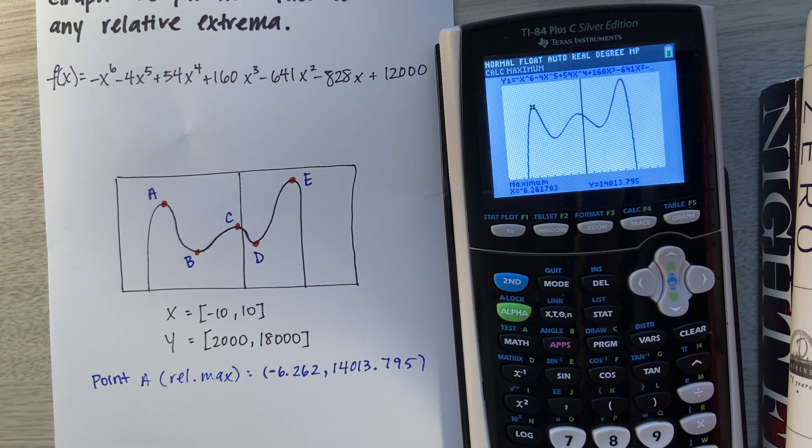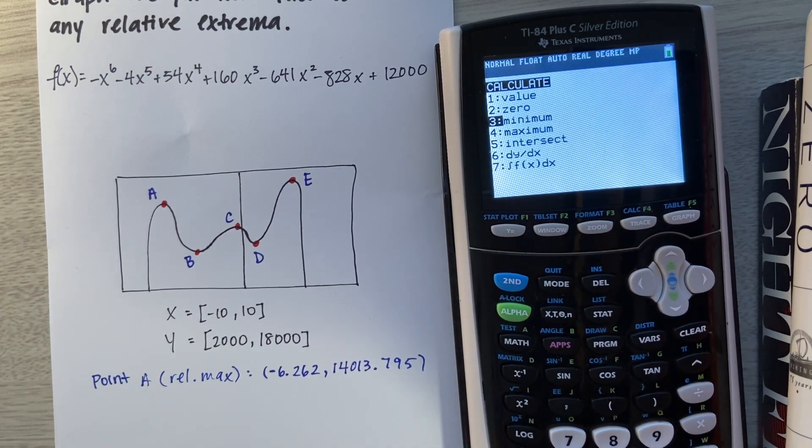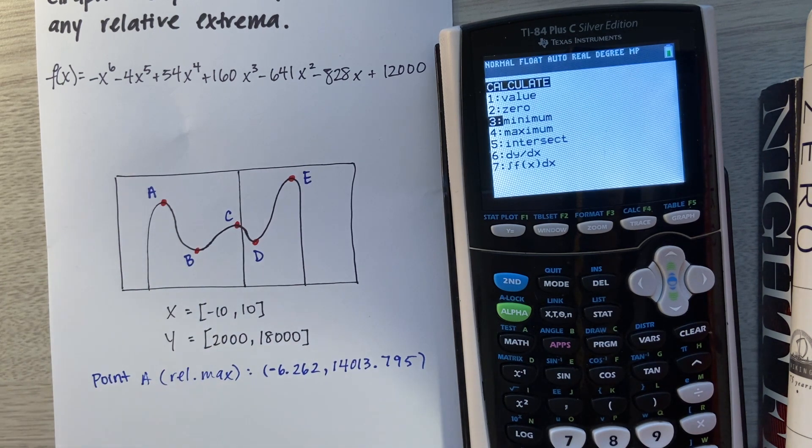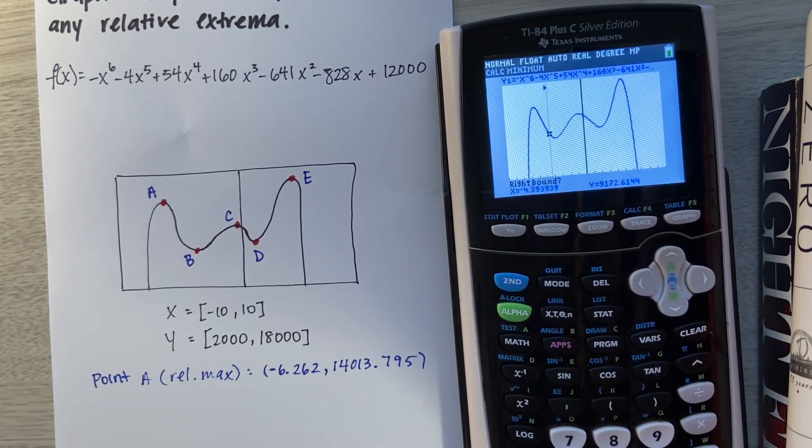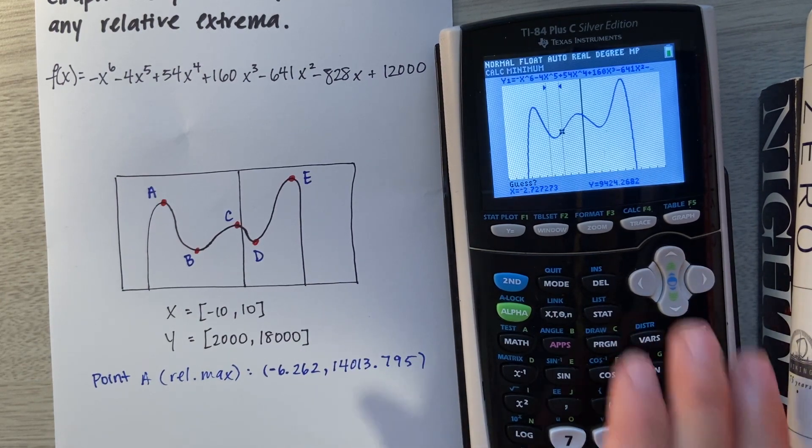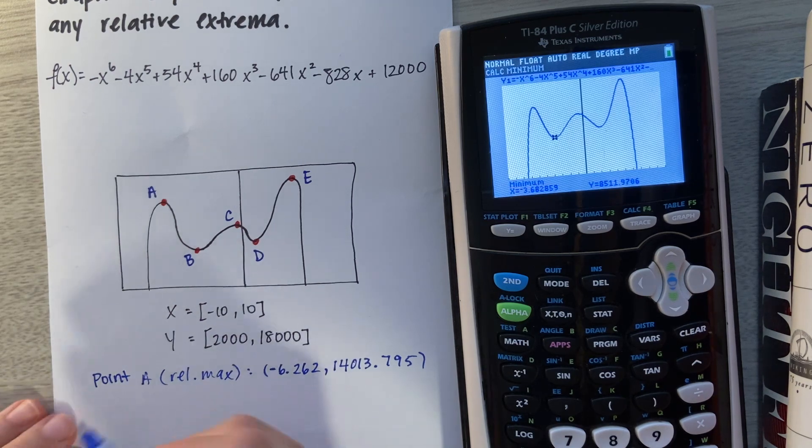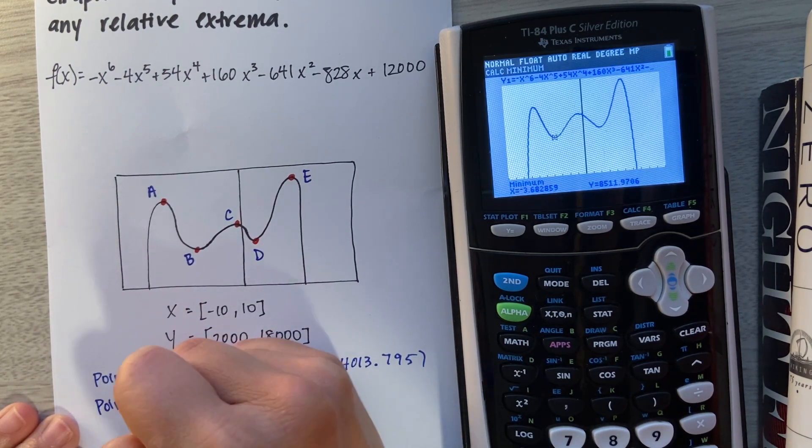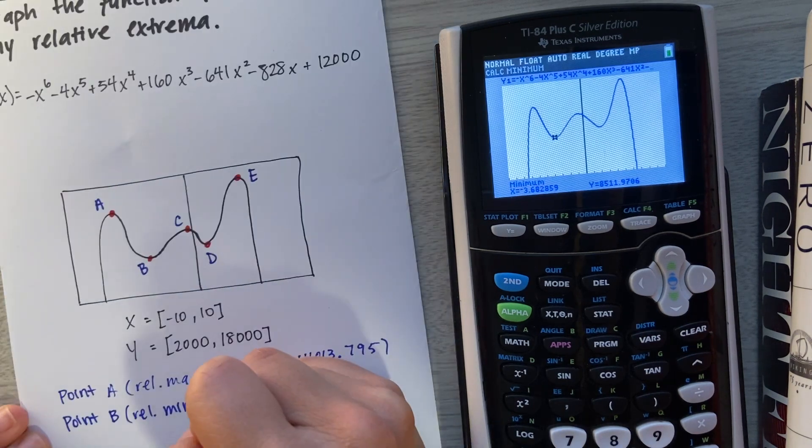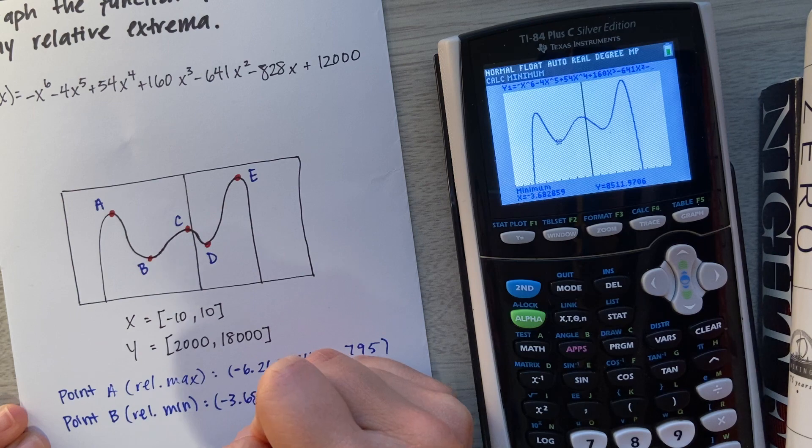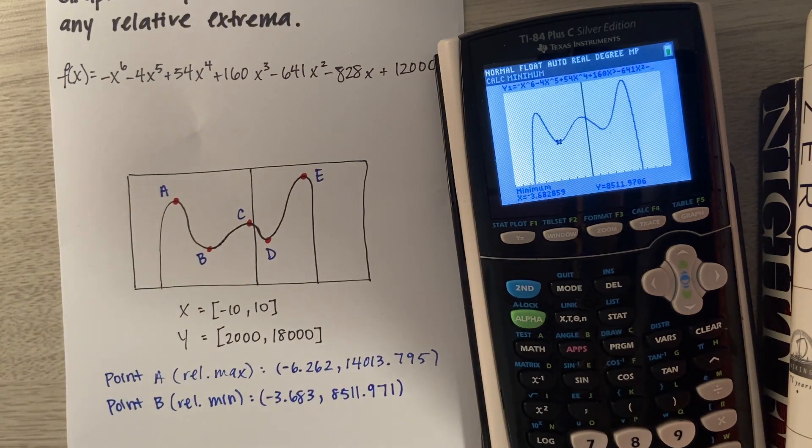Now let's do point B using the same process. Again, we're going to go Second, Calc. We're going to click Min this time because we're looking at point B, which is a relative minimum. We'll hit Enter and do the same thing. Use your arrow keys. We got our left bound. Let's get our right bound and our best guess. Perfect. Now we have point B. It's a relative min. Our X coordinate is -3.683, 8,511.971.